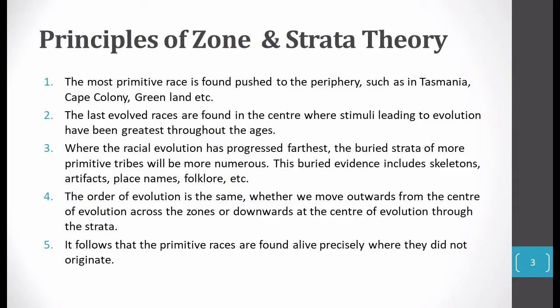The last principle: the first race will get the places where it originated. For example, the first race is at the periphery, but it will not originate there — it will originate in the central part. They are not found where they did originate, but they are alive precisely where they did not originate.